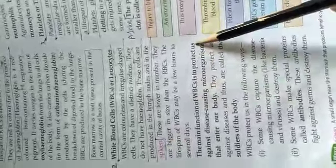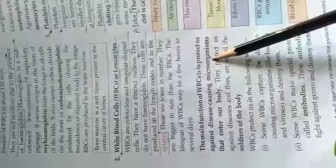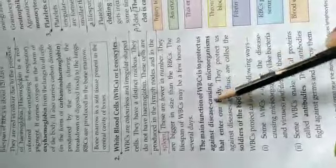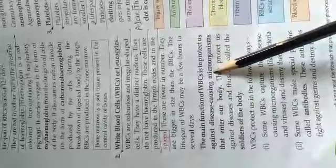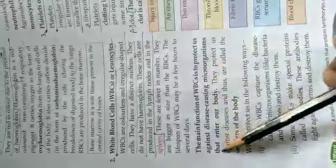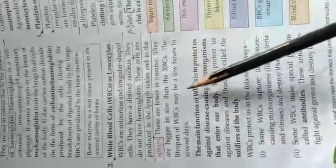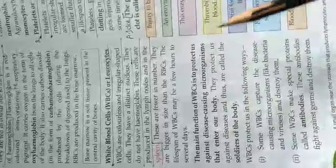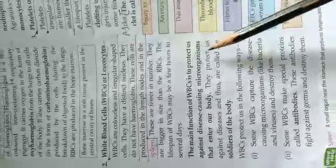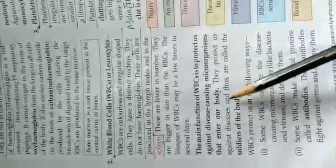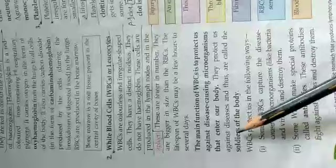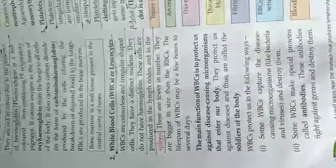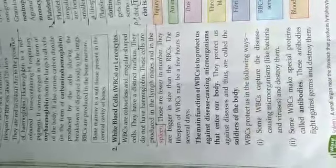The main function of WBC is to protect us against disease-causing microorganisms that enter our body. So what are microorganisms? Bacteria, virus, fungus - these are all microorganisms. And if these microorganisms enter inside our body, what happens? We get disease. So what is the main function of WBC? To protect us against disease-causing microorganisms. So these bacteria, virus, or fungus are not allowed to enter our body, so that we do not fall sick. They protect us against disease, and thus we call WBC the soldiers of the body. They protect our body from disease, so we call them soldiers of the body. I will tell you in the next video about platelets. Thank you.